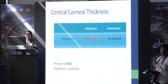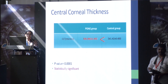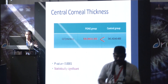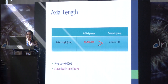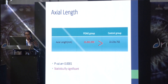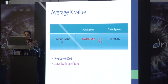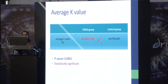In the study, it was found that the central corneal thickness in the primary open angle glaucoma group was significantly lower when compared to the control group. It was also found that the axial length in the primary open angle glaucoma group was significantly higher when compared to the control group. The average K value in the primary open angle glaucoma group was found to be significantly lower when compared to the control group.